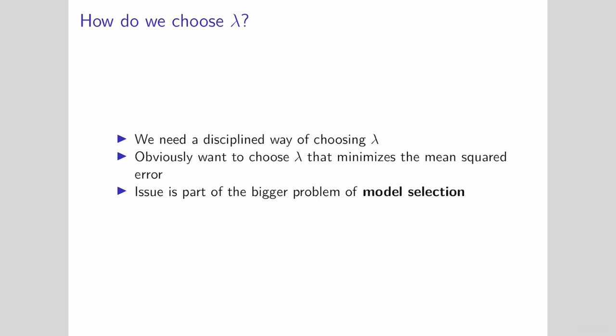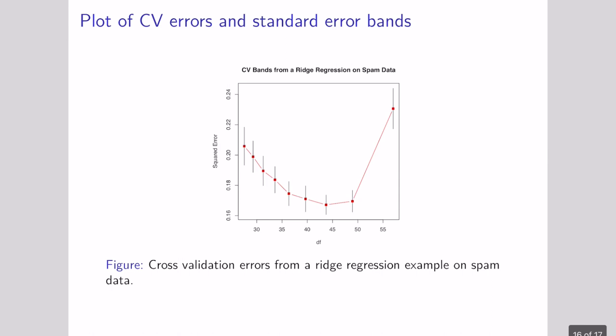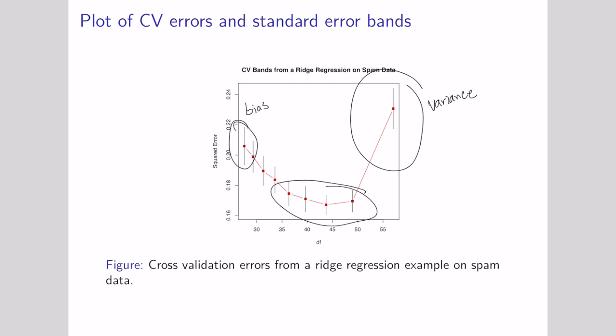So we have this useful form of regularization that introduces bias but gives us a model potentially with better prediction. We still don't know how to pick our lambda terms, and this will be part of the bigger problem of choosing among different models to identify which has better predictive value. We'll solve that using cross-validation, which we'll really dig into next lecture. If we use cross-validation with ridge regression, we'll see that for large values of lambda, we end up with larger error due to high bias, and with small values of lambda, we get lots of error due to variance. In the middle, we'll find a solution where we can actually predict things effectively.